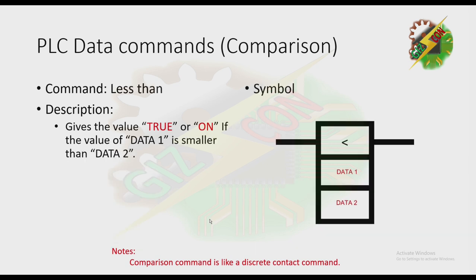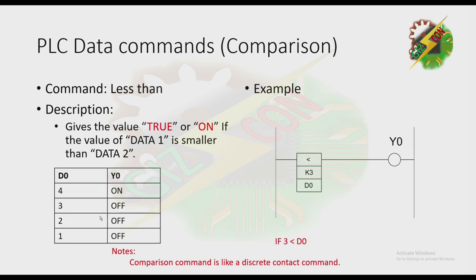Next is Less Than — it gives the value true or ON if the value of Data 1 is smaller than Data 2. This is the symbol for this command. The command means: if 3 is less than D0. From the table: 3 is less than 4, so Y0 is on; 3 is not less than 3, so Y0 is off; 3 is not less than 2, so off; and 3 is not less than 1, so Y0 is off.